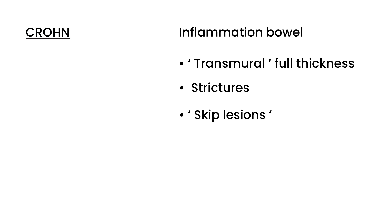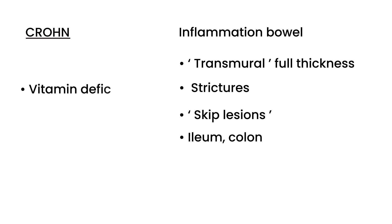Crohn's disease can happen anywhere — not just in the large intestine. It can occur in the ileum or the colon, unlike ulcerative colitis, which is limited to the colon. Crohn's can also occur in the small intestine. Additionally, Crohn's can lead to vitamin deficiencies, which are frequently tested on licensing exams. The two key ones are vitamin D and vitamin B12.